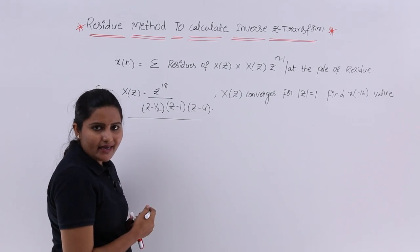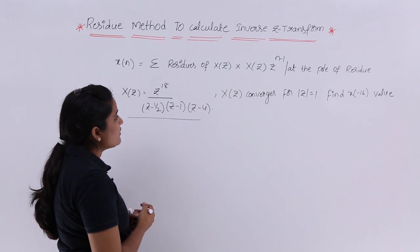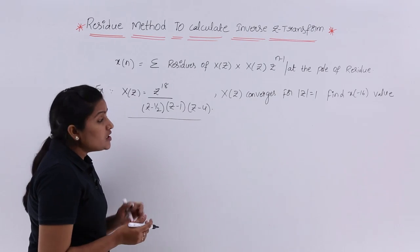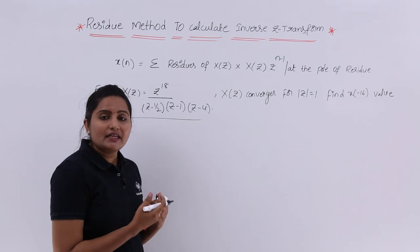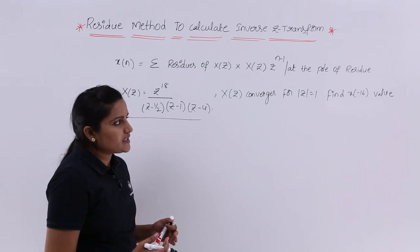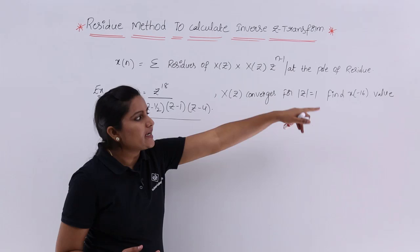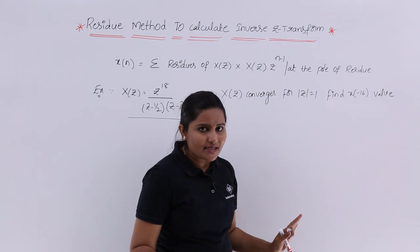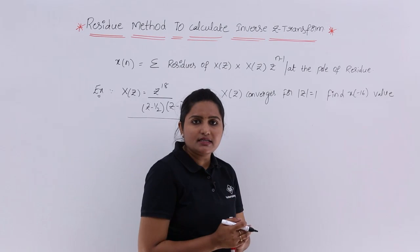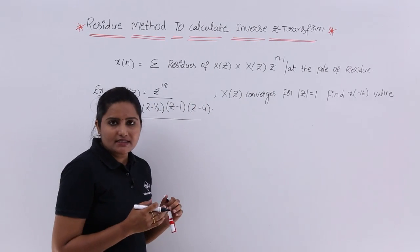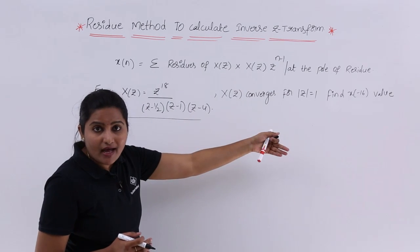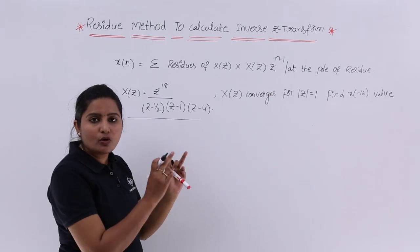Consider the example X(Z) = Z^18 divided by (Z - 1/2)(Z - 1)(Z - 4). This is our Z transform of a signal. We need to find the inverse Z transform X(N), specifically the value X(-16). When they are asking for a particular value of the signal, you can use this method.